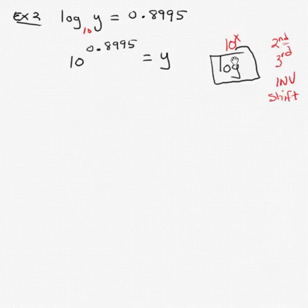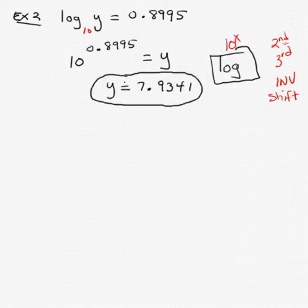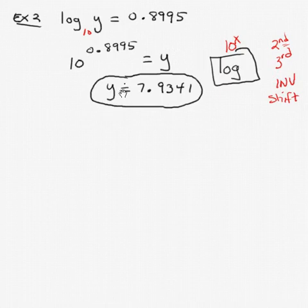So when we look for that, the LOG button, above it should be 10 to the x. Look for another button the same color. It could be second function, third function, inverse or shift. Or maybe you just select this from a list of logarithmic functions if you have a newer calculator. So what we need to do, typically, is type in the exponent 0.8995. And then hit that second or third or inverse or shift and the log button. And we get our answer is approximately 7.9341.